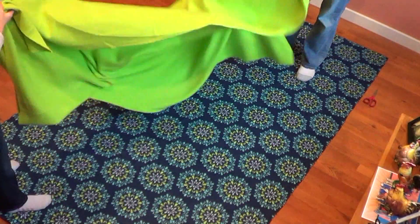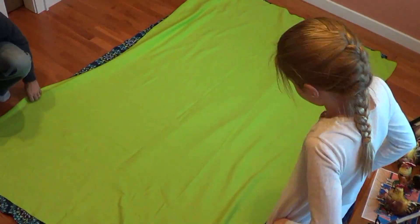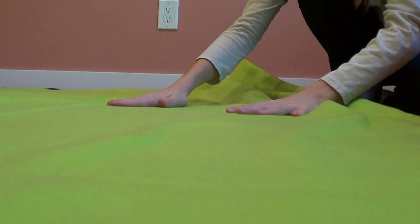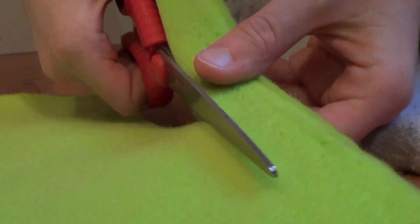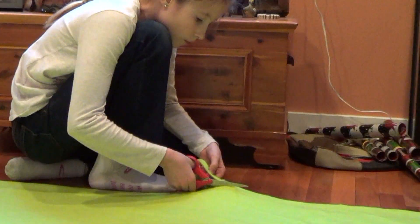Now put the second piece of cloth on top of the first. Again, try to get as many of the wrinkles out as you can. Now cut the second cloth's edges like the first.